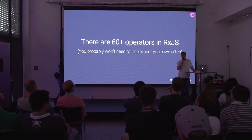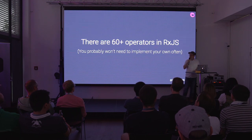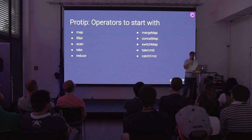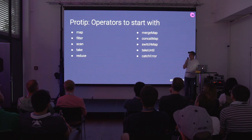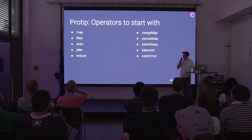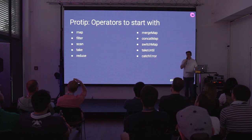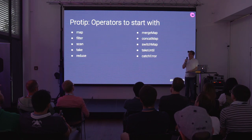You don't really need to memorize them all. There are only a few you really want to care about to start with: map, filter, scan — which is basically reduce but emits the reduced value every single time — take, and reduce, which reduces down and gives you the reduced value when it completes.